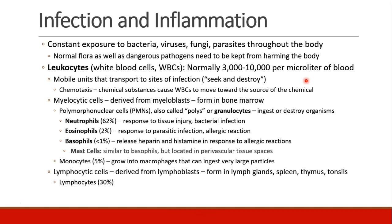There are many different kinds of leukocytes. Myelocytic cells are derived from myeloblasts in the bone marrow. Polymorphonuclear cells — also called polys or granulocytes — ingest and destroy pathogenic organisms. Neutrophils respond to tissue injury and bacterial infection. Eosinophils respond to parasitic infections and allergic reactions. Basophils release heparin and histamine in response to allergic reactions. There are also mast cells, which are like basophils but found in perivascular tissue spaces rather than in the circulation.